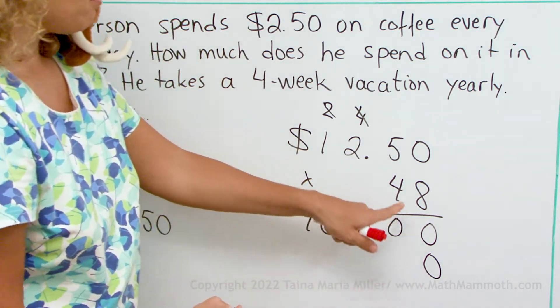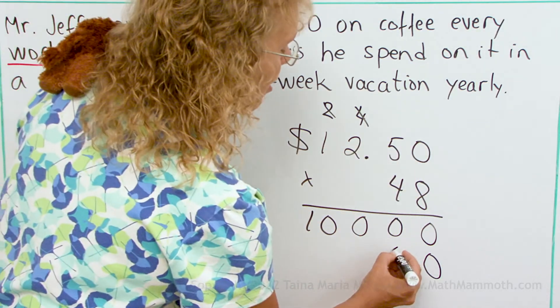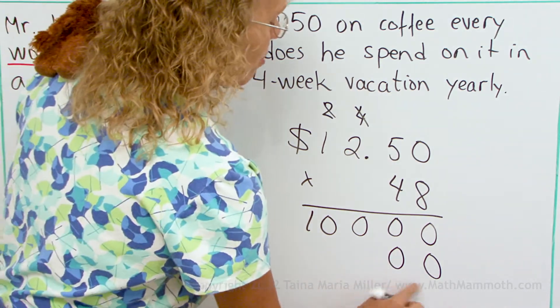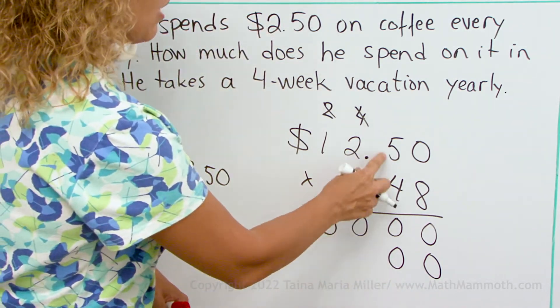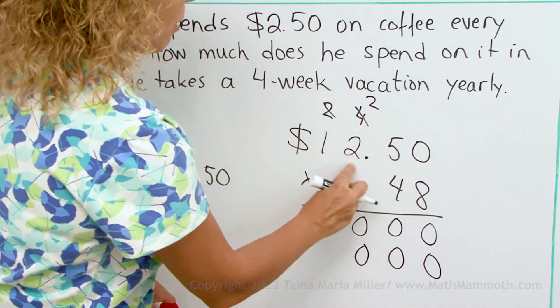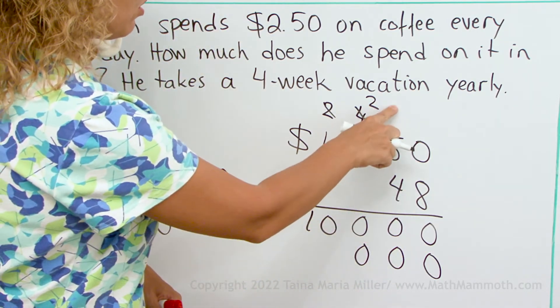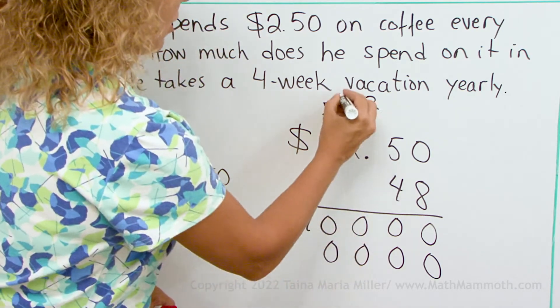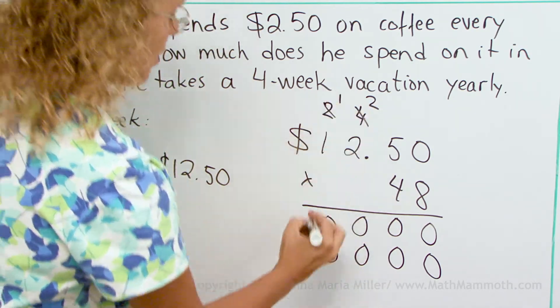Okay, so after that we multiply 4 times 0. That's a zero again, okay? So those zeros came from a different thing. Then 4 times 5 equals 20. Another zero. 4 times 2, 8, plus 2 is 10. Another zero. And then 4 times 1 plus 1 is 5.